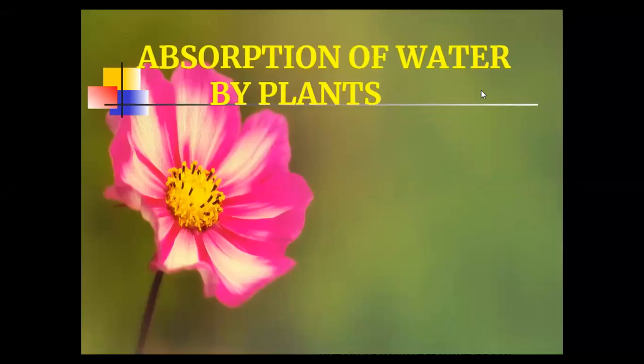Absorption of water by plants occurs by three ways: one is diffusion, second one is imbibition, and third one is osmosis.